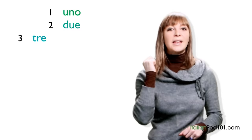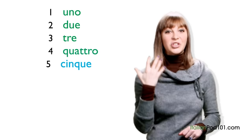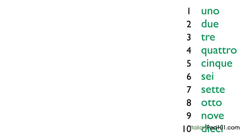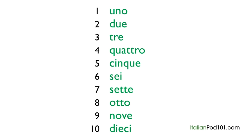Uno, due, tre, quattro, cinque, sei, sette, otto, nove, dieci. Now repeat after me — I'll say the numbers and give you time to repeat each one: uno, due, tre, quattro, cinque, sei, sette, otto, nove, dieci.